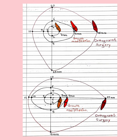The change produced by growth modification is more than tooth movement alone, and the change produced by orthognathic surgery — i.e. the potential for retraction — is greatest with orthognathic surgery compared to growth modification or orthodontic tooth movement alone.